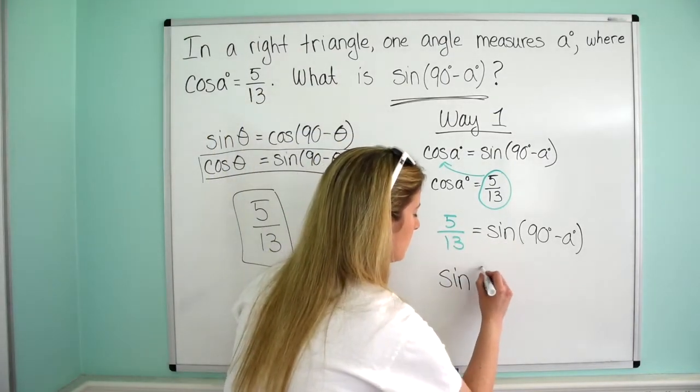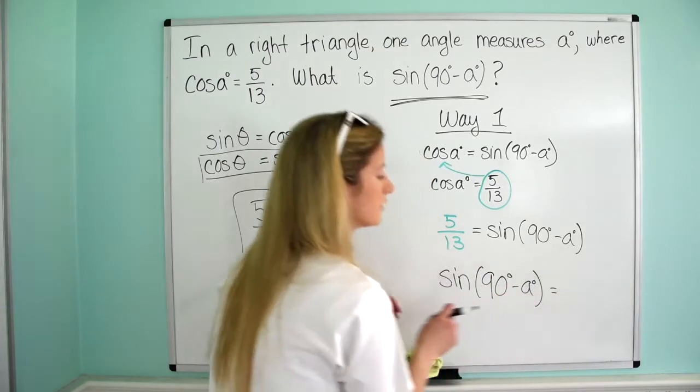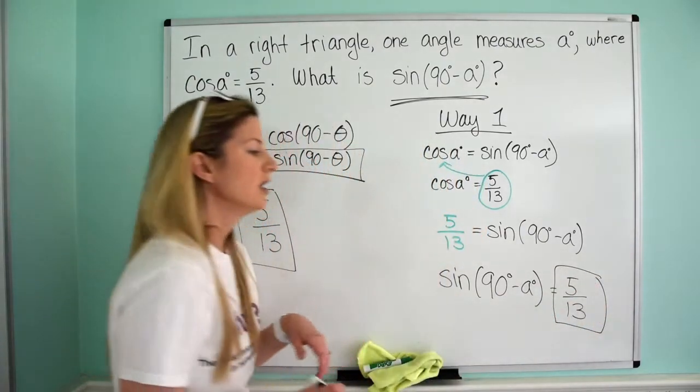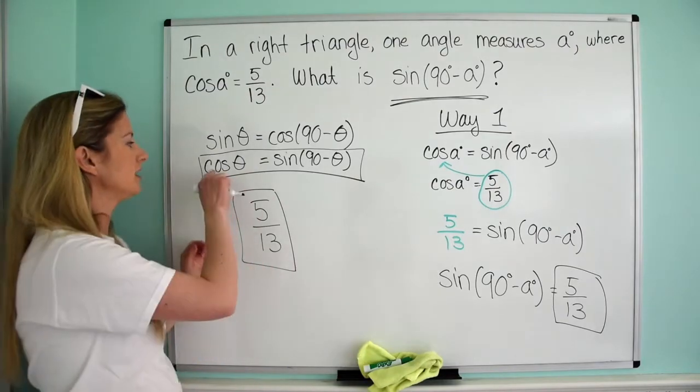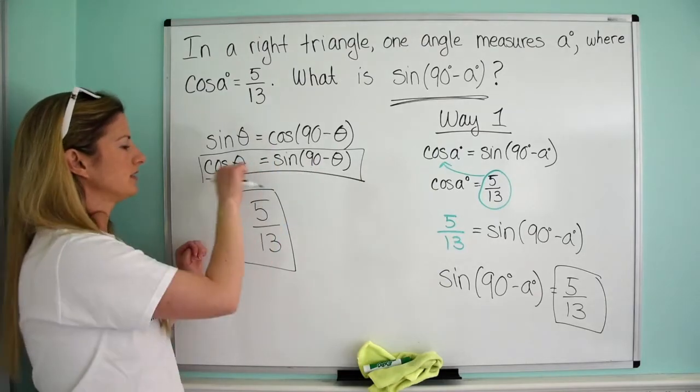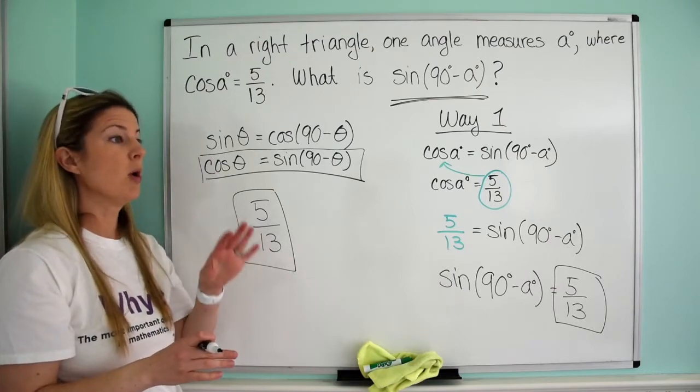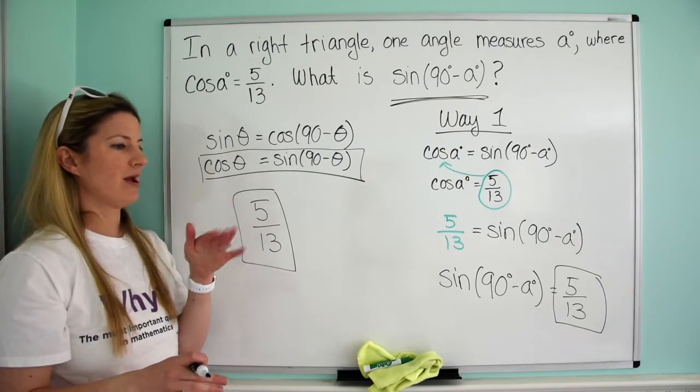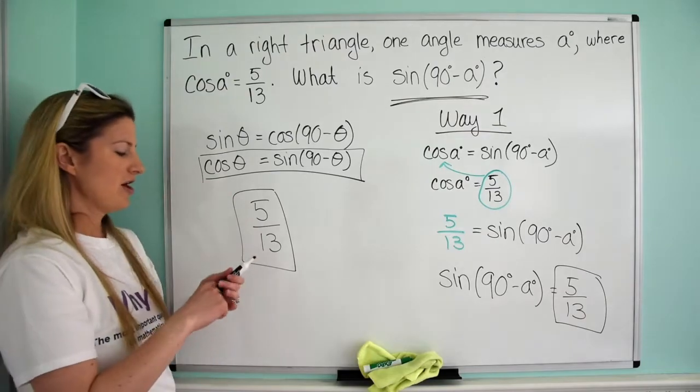So I have right here, the sine of 90 minus A is 5 over 13. So then I could write it as the sine of 90 minus A equals 5 over 13. So there's your answer. Your first way to do this problem is just using the cofunction identity that states the cosine of theta equals sine of 90 minus theta. Super fast. Just memorize it. Just know this tends to show up a lot on the SAT.